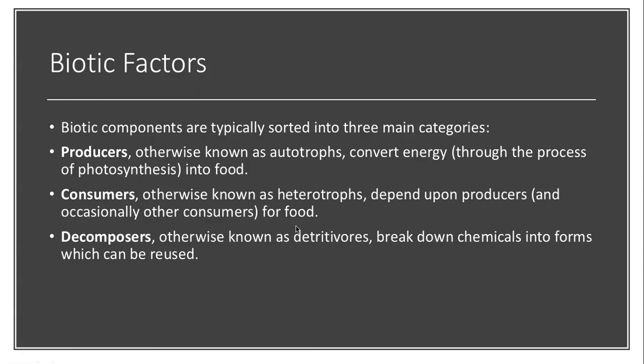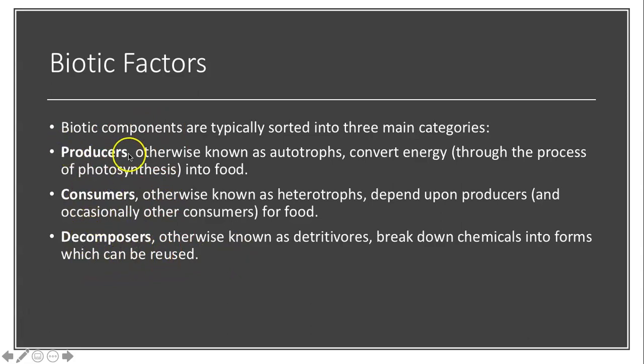Now we can talk about biotic factors — they have three main categories: producers, consumers, and decomposers. Producers, or autotrophs, convert energy through photosynthesis into food and produce oxygen as a byproduct. Consumers, or heterotrophs, depend on producers and occasionally other consumers for food — they need to capture and eat other organisms to get energy. Decomposers, or detritivores — like fungi or bacteria — break down chemicals in dead bodies back into forms which can be reused by other organisms. If any of these three levels breaks down, we get a massive breakdown of the whole system.